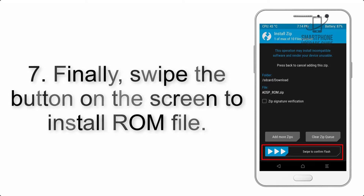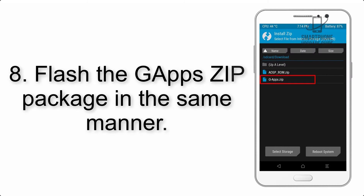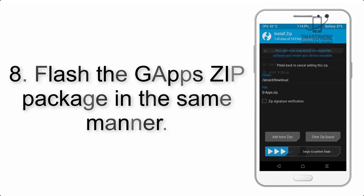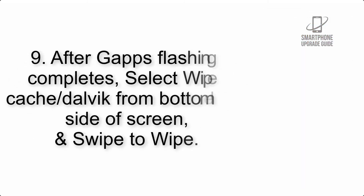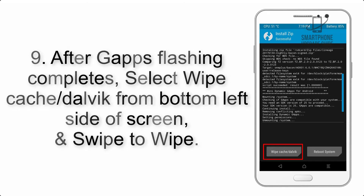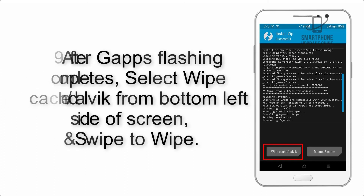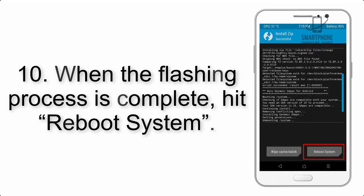Step 6: Navigate to the storage and select the ROM zip file. Step 7: Swipe the button on the screen to install the ROM file. Step 8: Flash the GApps zip package in the same manner. Step 9: After GApps flashing completes, select Wipe Cache and Dalvik from the bottom left side of the screen and swipe to wipe.